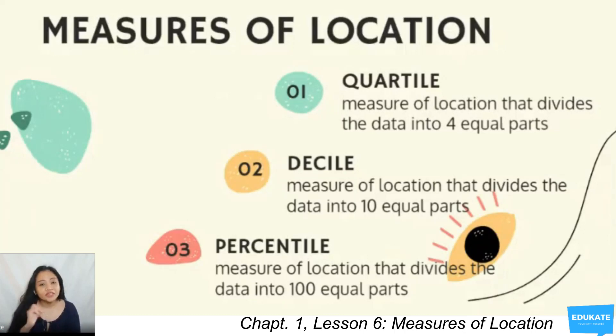You have there three: quartile, decile, and percentile. When we say quartile, it's the measure of location that divides your data set into four equal parts, quarters. Decile divides the data into 10 equal parts. And then you have percentile, the measure of location that divides the data set into 100 equal parts.